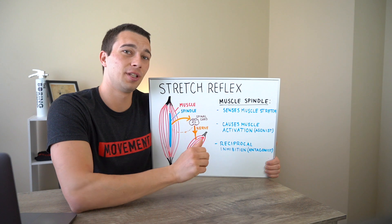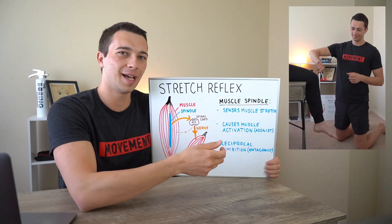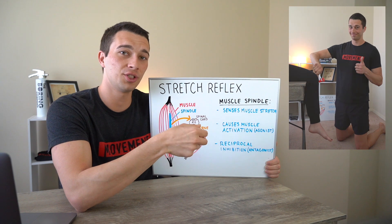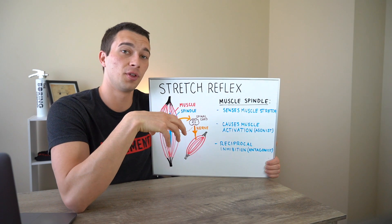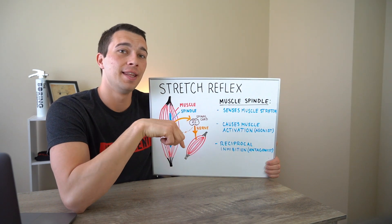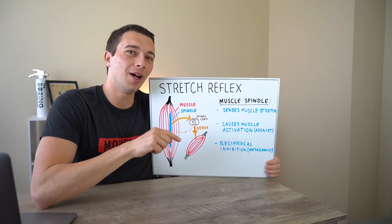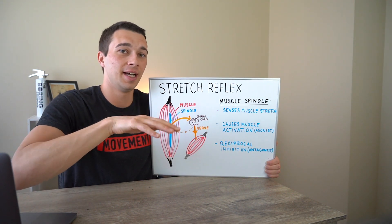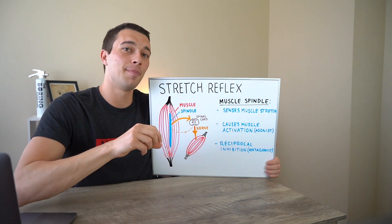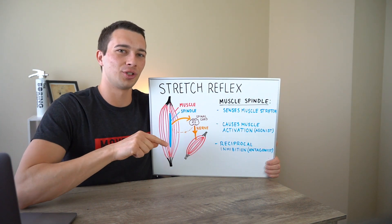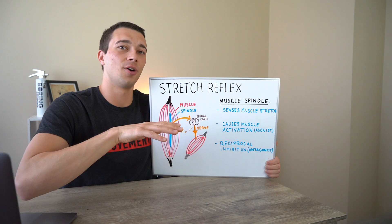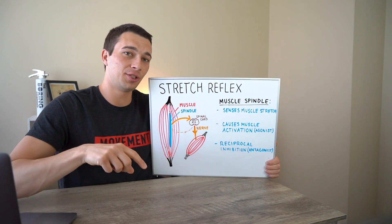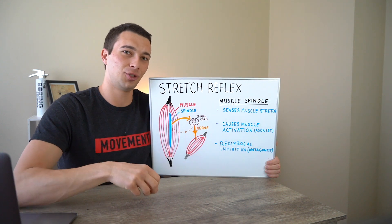Another example is the patellar tendon reflex. We use a reflex hammer to tap the patellar tendon, causing a quick stretch of that tendon and the quadricep muscle. That signal feeds back to the quadricep and facilitates or activates it — which is why we see that leg extension movement. At the same time, we're inhibiting the hamstring to allow the leg to kick out. So tapping that knee produces activation of the quad and inhibition of the antagonist hamstring muscle.